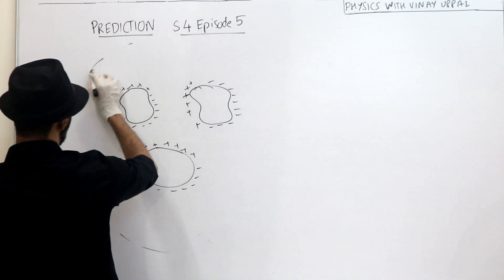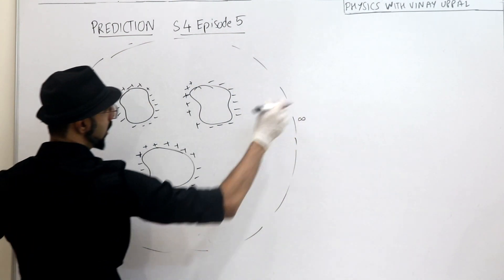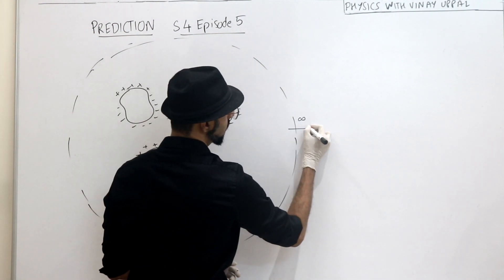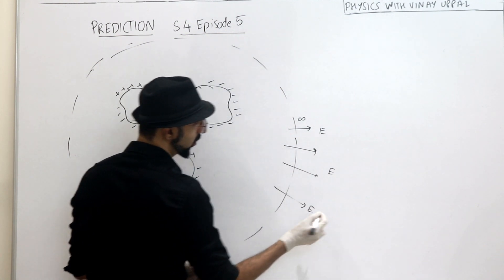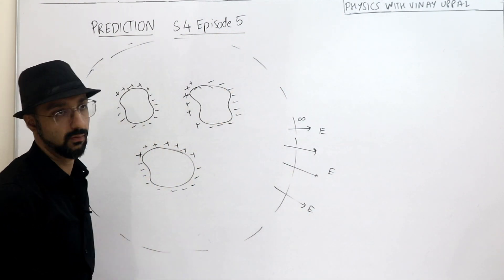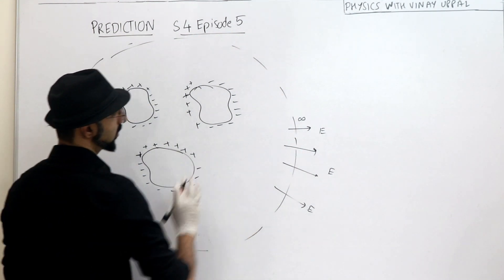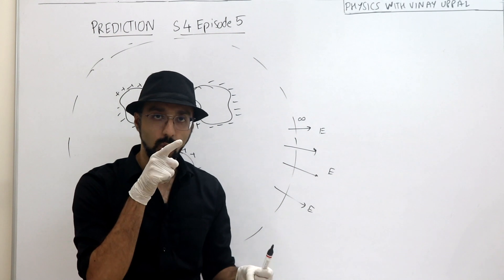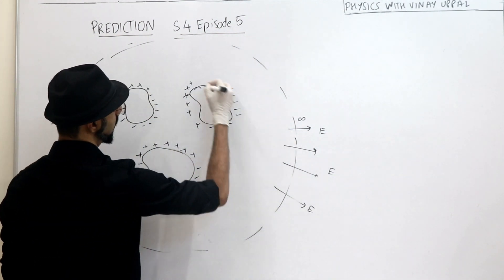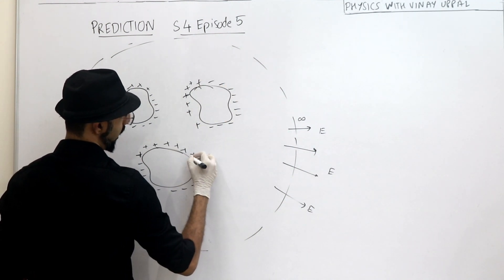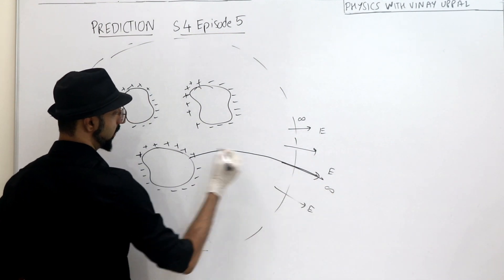If I just enclose it with a Gaussian surface at infinity, the field lines will go outward this way. Total flux is positive. So we are at infinity and the field lines are going towards infinity. Let's say this particular field line is going towards infinity from a positive charge.